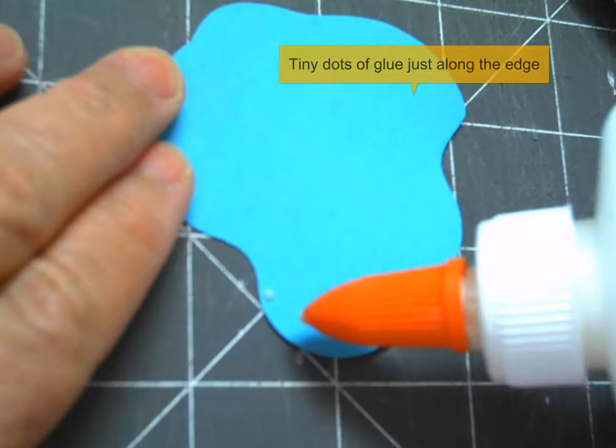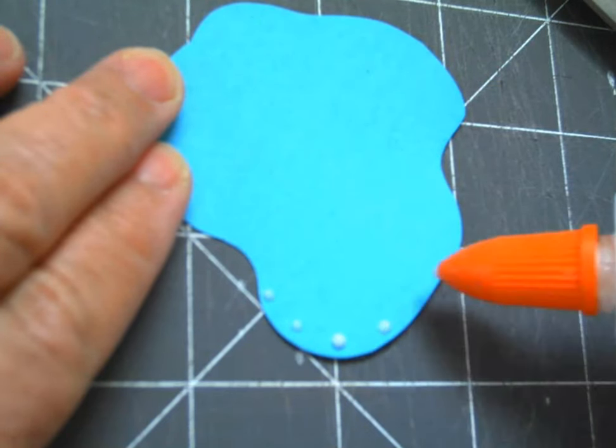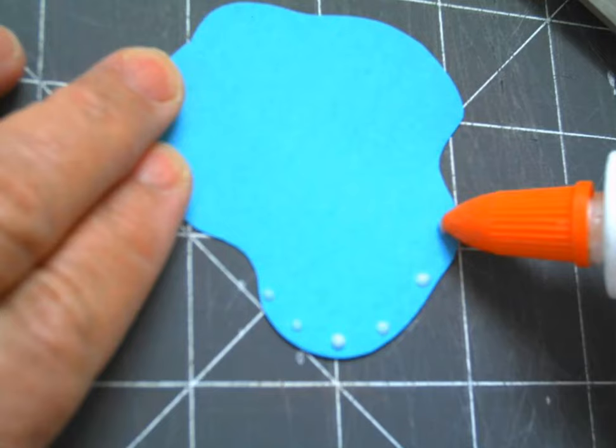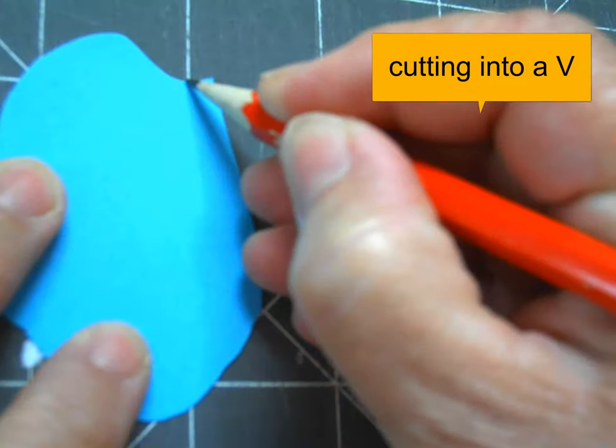Apart from scissors we're going to use glue. Liquid glue sticks work best. When you're doing paper sculpture you want to use just tiny dots along the edges.